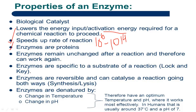All proteins are not enzymes, but all enzymes are protein in nature. Enzymes can change their shape from a linear structure to secondary, tertiary, or quaternary structure. Enzymes remain unchanged after a reaction and therefore can work again. When performing any metabolic activity, they can participate in that reaction, but after the reaction their chemical nature is unchanged and they can work again for the same reaction — meaning they can be utilized again and again.